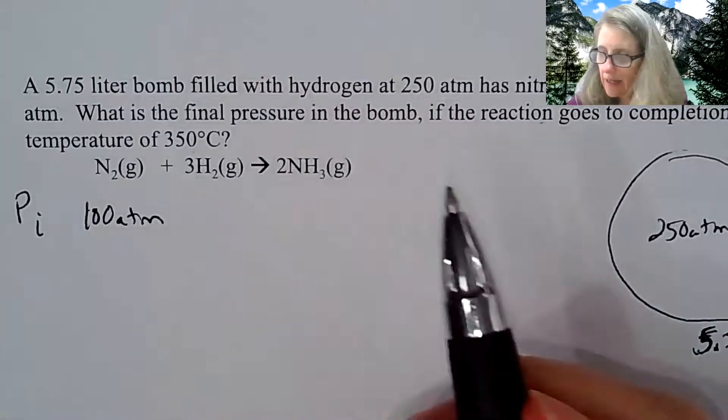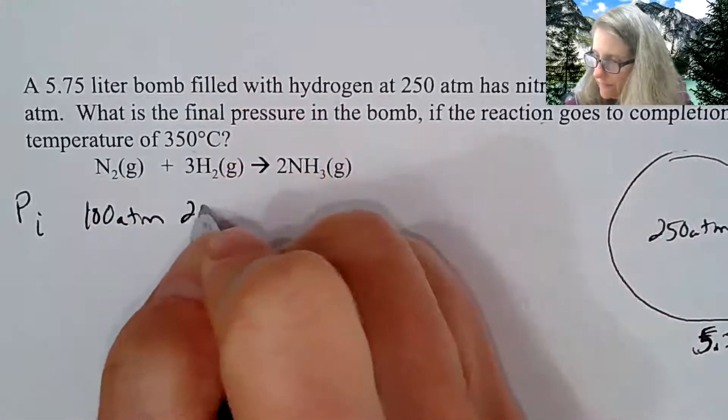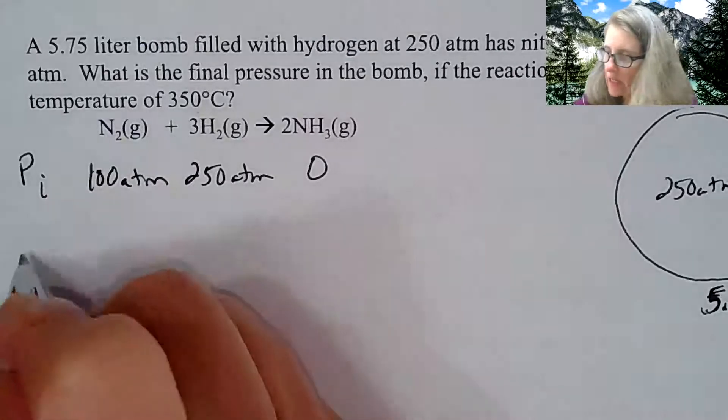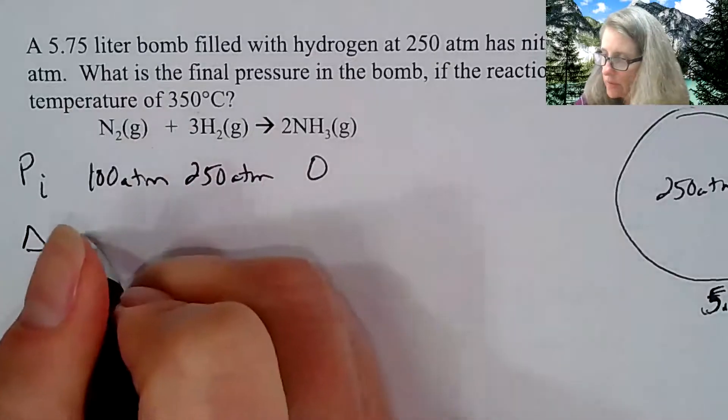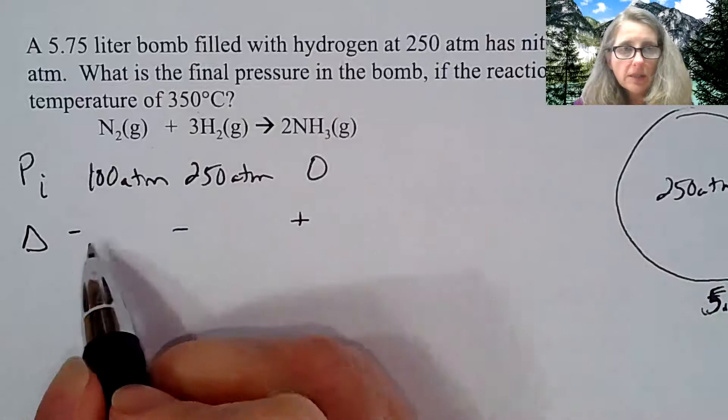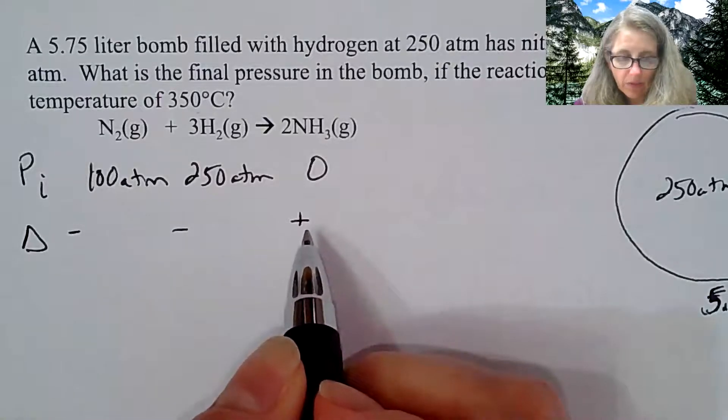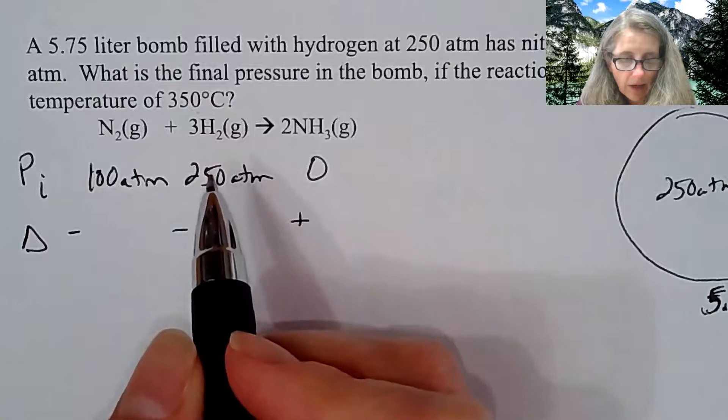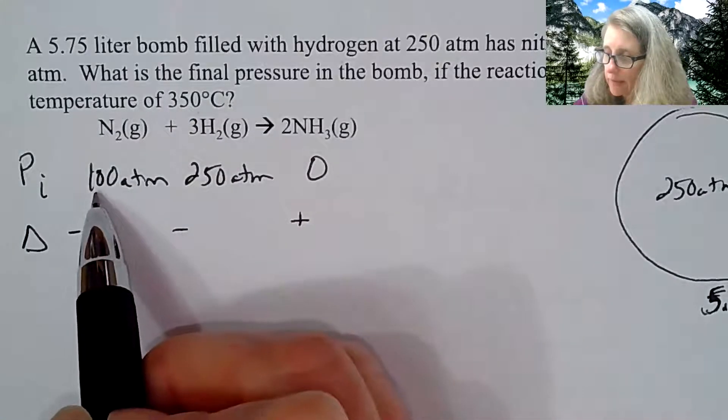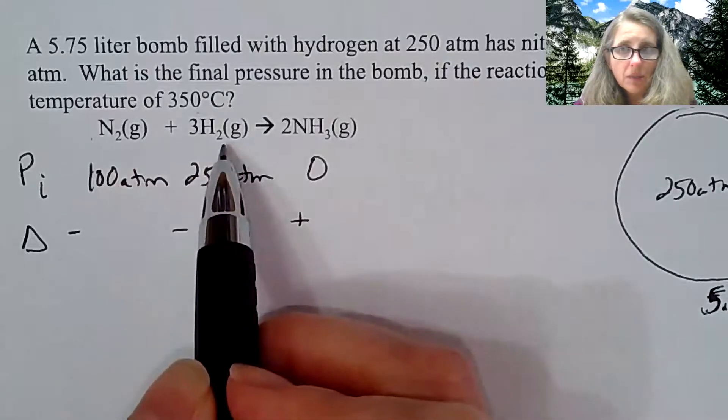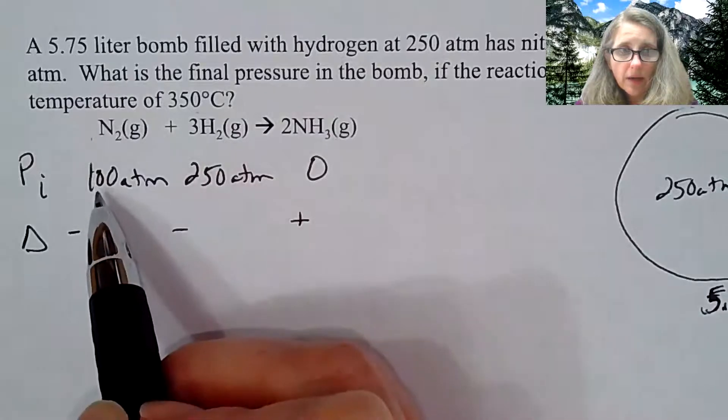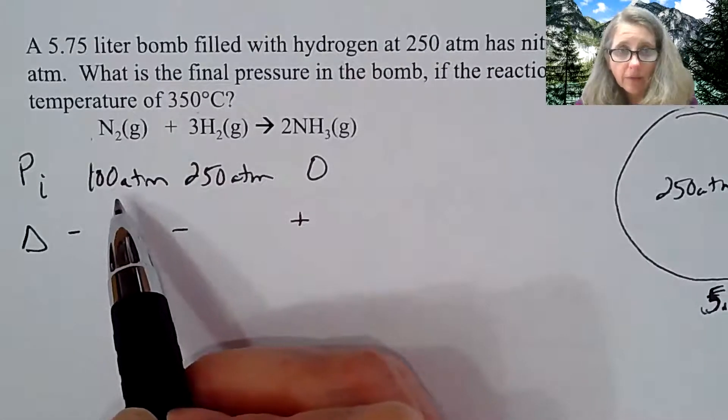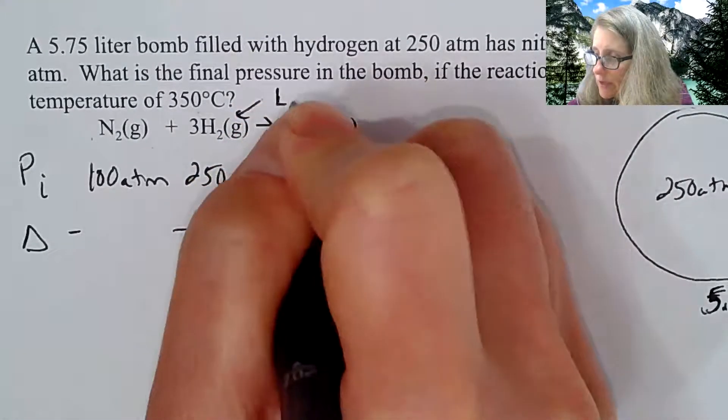My initial pressure for nitrogen is 100 atmospheres. My initial pressure of my hydrogen is 250. I have no ammonia at the beginning. So this is my pressure initial. Then change happens. I have to take the nitrogen and the hydrogen and make the ammonia. This side is going to be negative and this is going to be positive. If I look at this proportionately, if I have 100 atmospheres of nitrogen, how many atmospheres of hydrogen do I need to react with that 100? It's 1 to 3, so I would need 300 atmospheres of hydrogen. I don't have 300, so therefore the hydrogen has to be my limiting reagent.